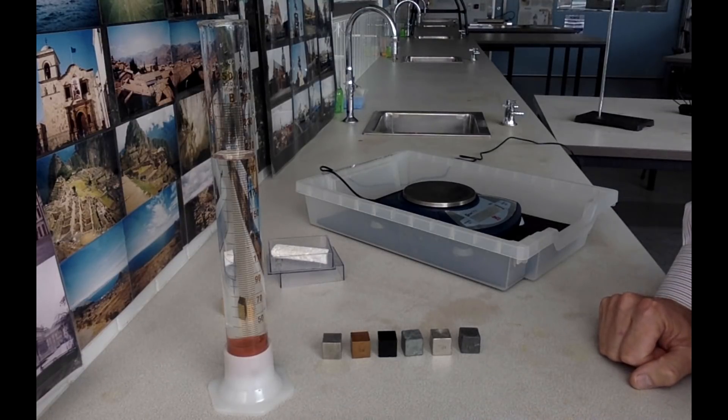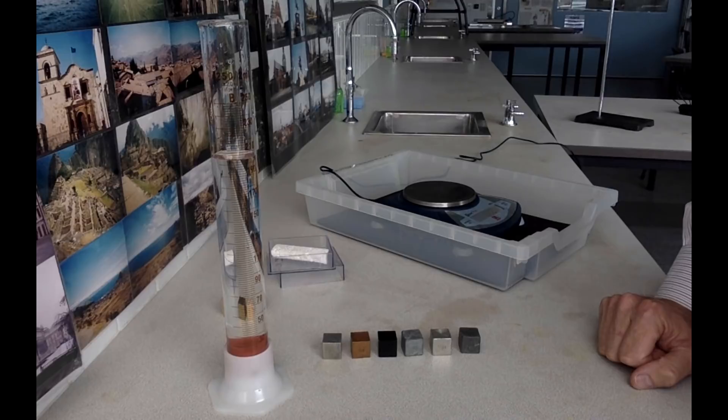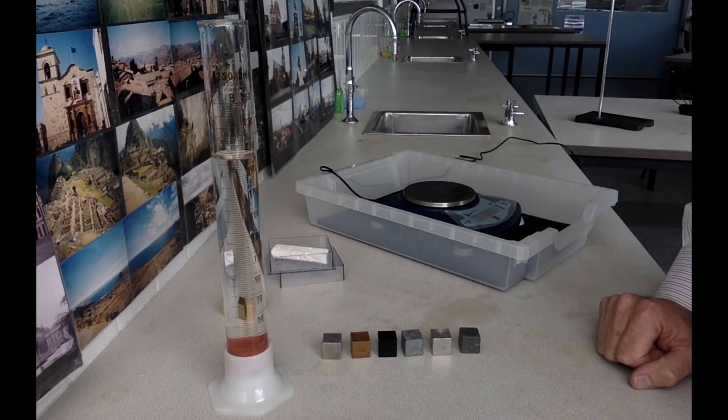Now to measure the density of these metals we need to know their mass and their volume, and it's easier if you measure their mass first while they're still dry.